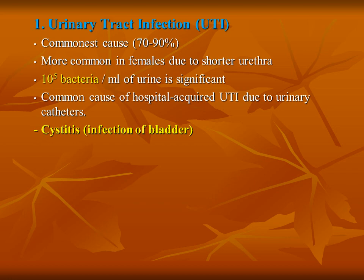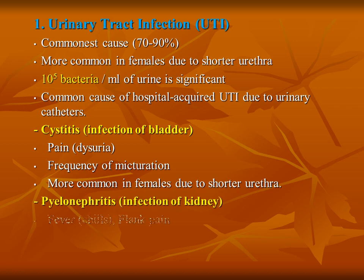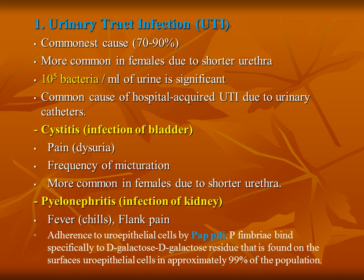Cystitis is infection of the bladder, with symptoms of pain and frequency of urination, more common in females due to the shorter urethra. Pyelonephritis is infection of the kidney, with symptoms of fever, chills, and flank pain. The virulence factor that makes E. coli a uropathogen is PAP pili, or PAP fimbriae, which facilitate the bacteria to adhere to uroepithelial cells and cause UTI or pyelonephritis infection.